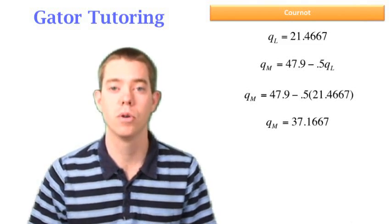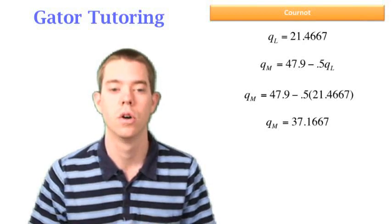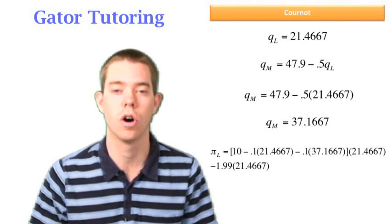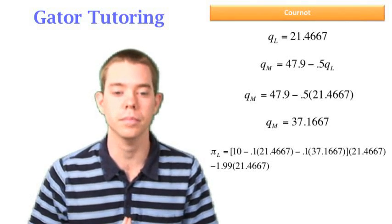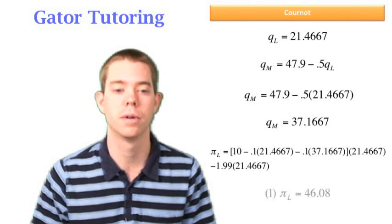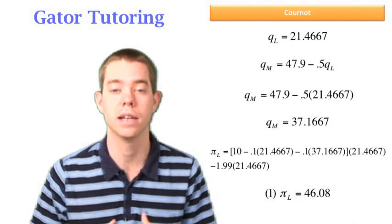So now we have both QL and QM under scenario one, where Larry had $1.99 cost. We can plug both of these into Larry's profit function to solve for Larry's profit. Well, be careful with the algebra here, but this is just algebra from now on, and we find that in the first scenario, Larry's profit is $46.08.